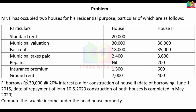The loan is Rs. 30,000 with a rate of interest of 20%. Loan was taken on June 1, 2015, and repayment is on May 10, 2023. Both houses are completed in May 2020. We need to calculate the taxable income under the head of house property. Both houses are for self-occupied purpose.